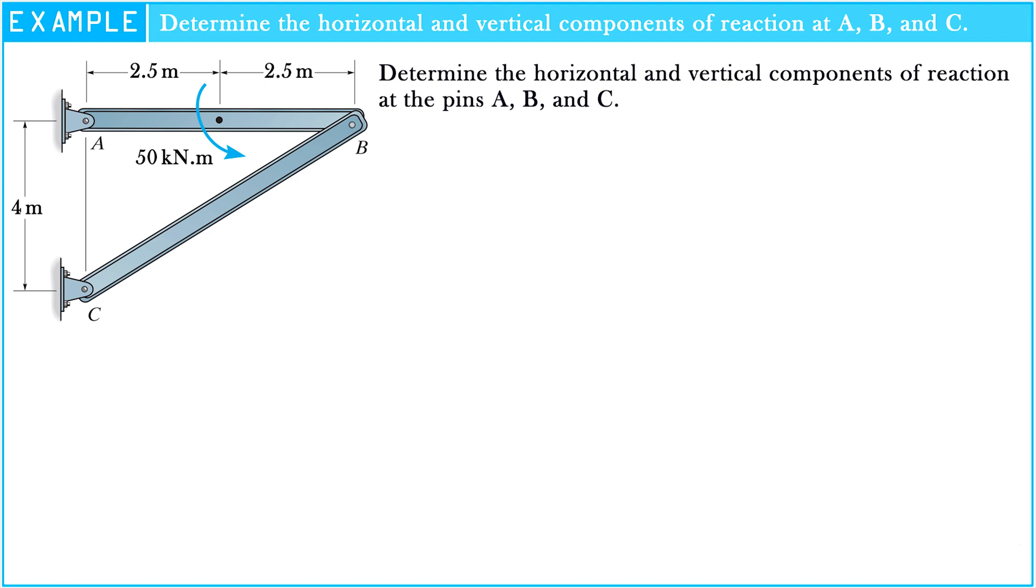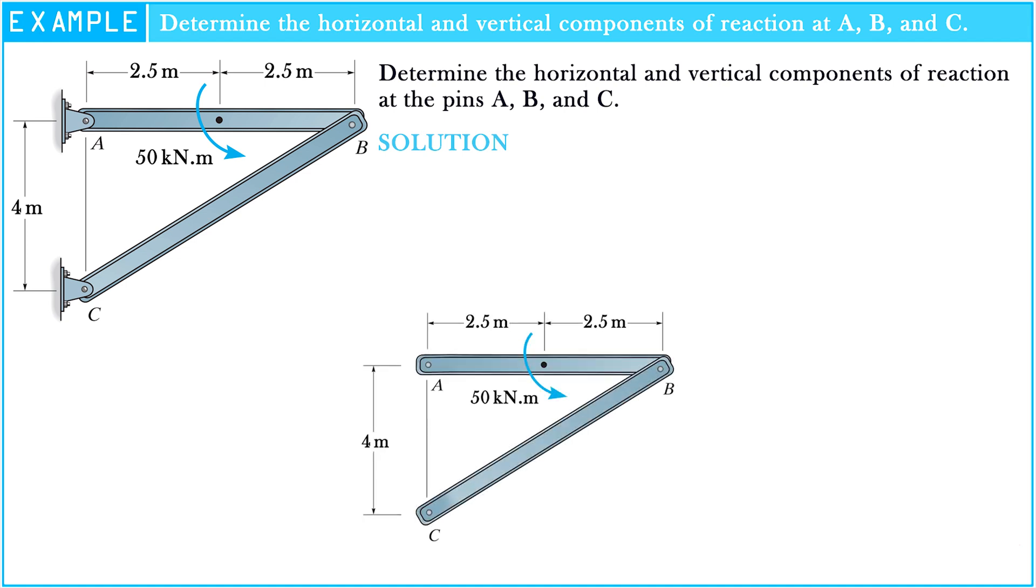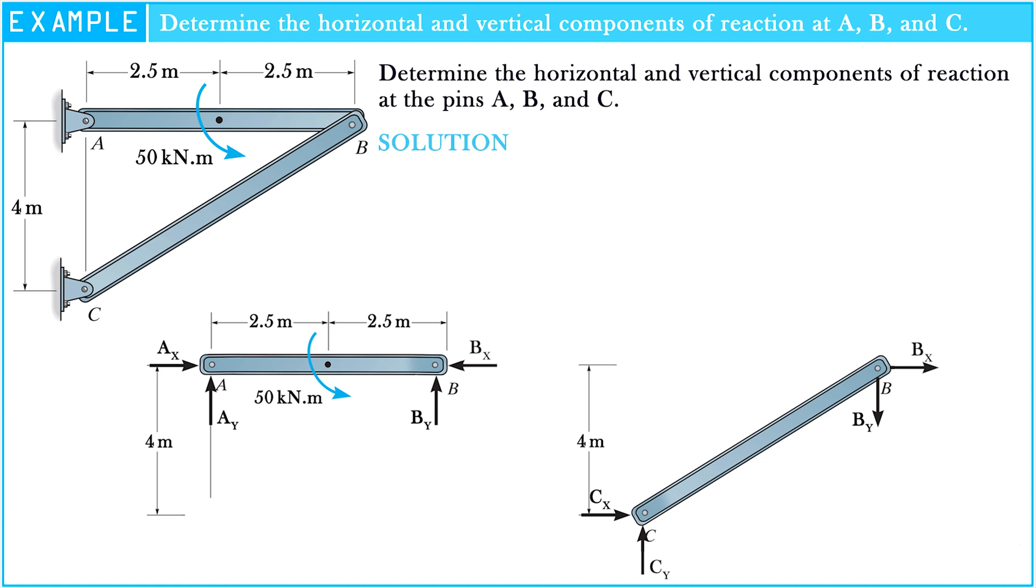Look at the figure of the problem. We see there are two members connected to each other by a hinge connection. So in order to determine the reactions at A, B, and C, first of all, we need to divide the free body diagram into two parts: segment AB and segment CB.